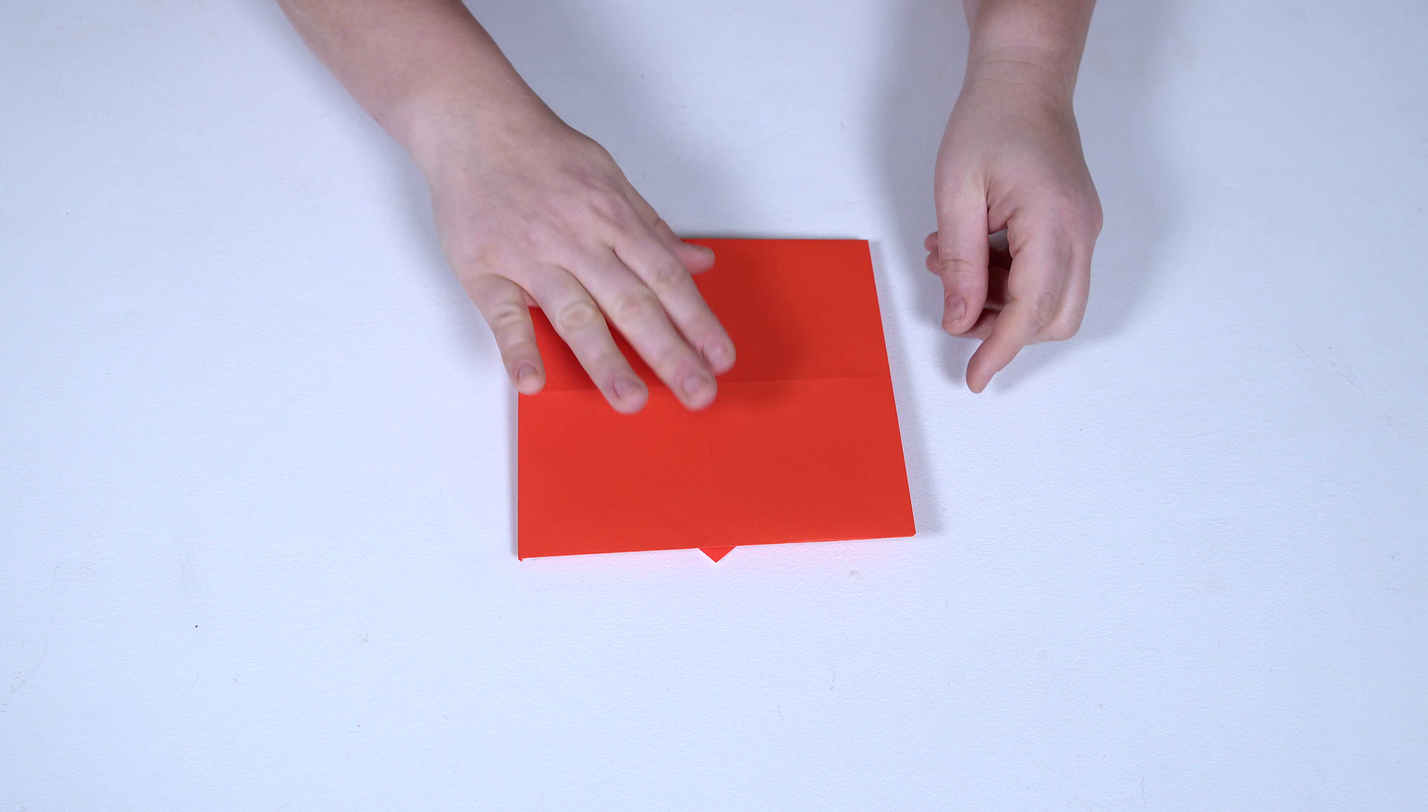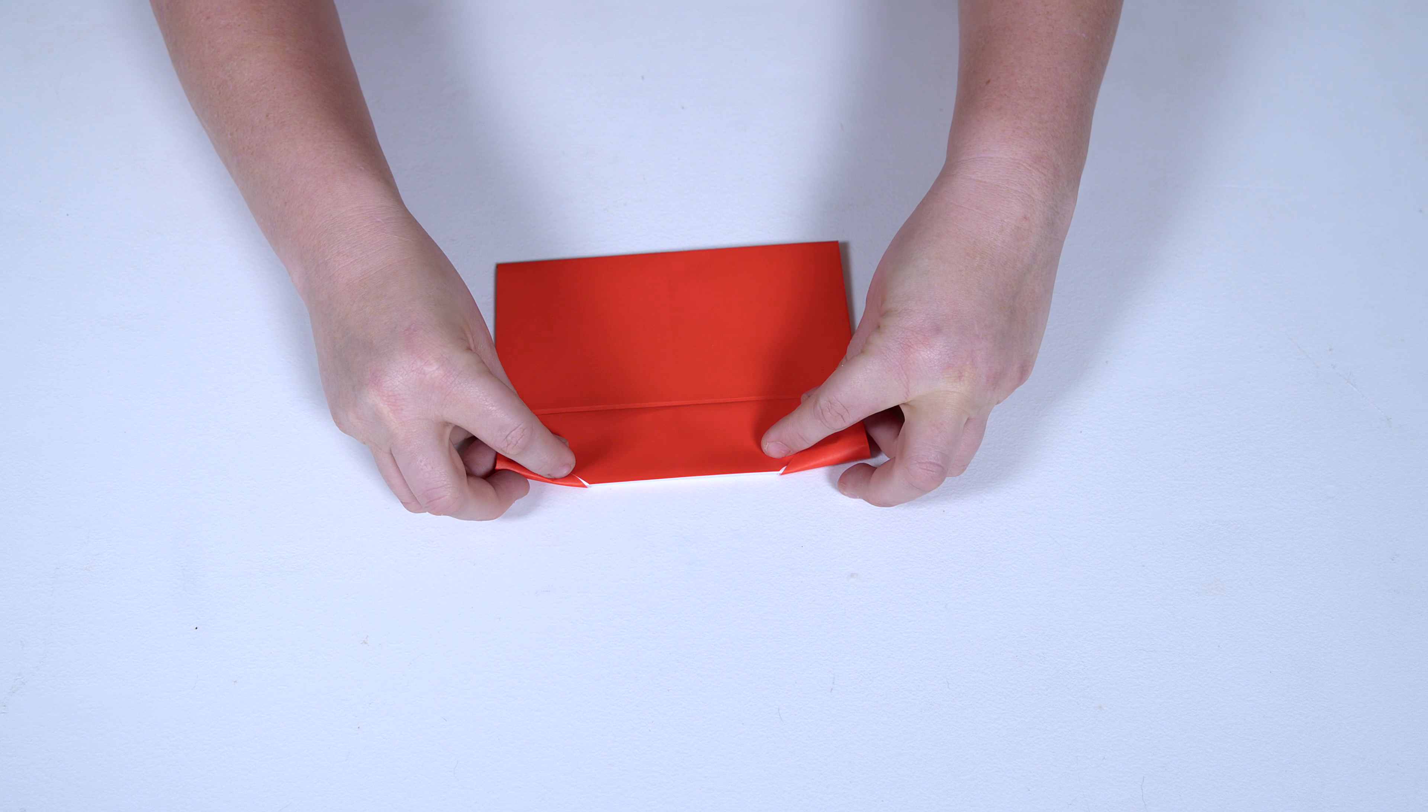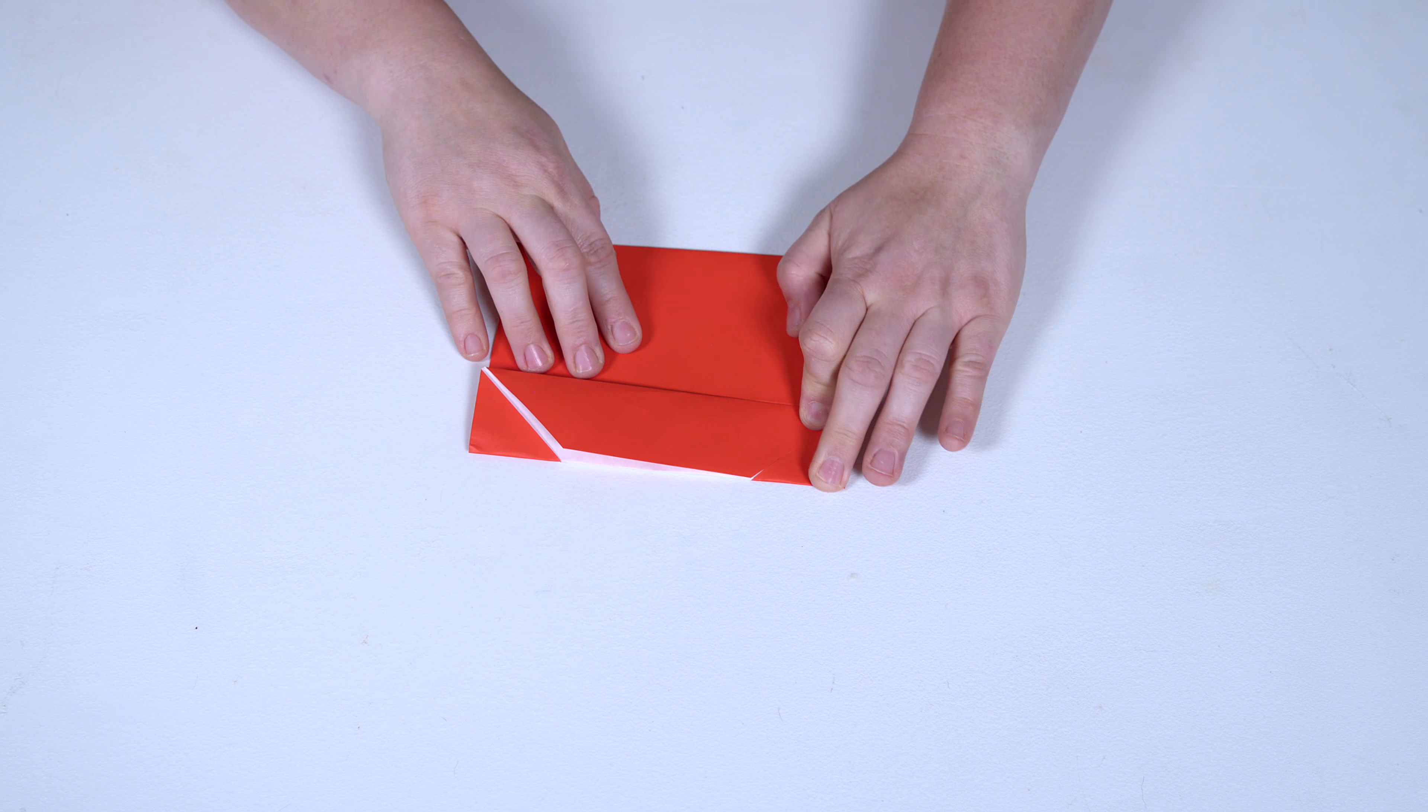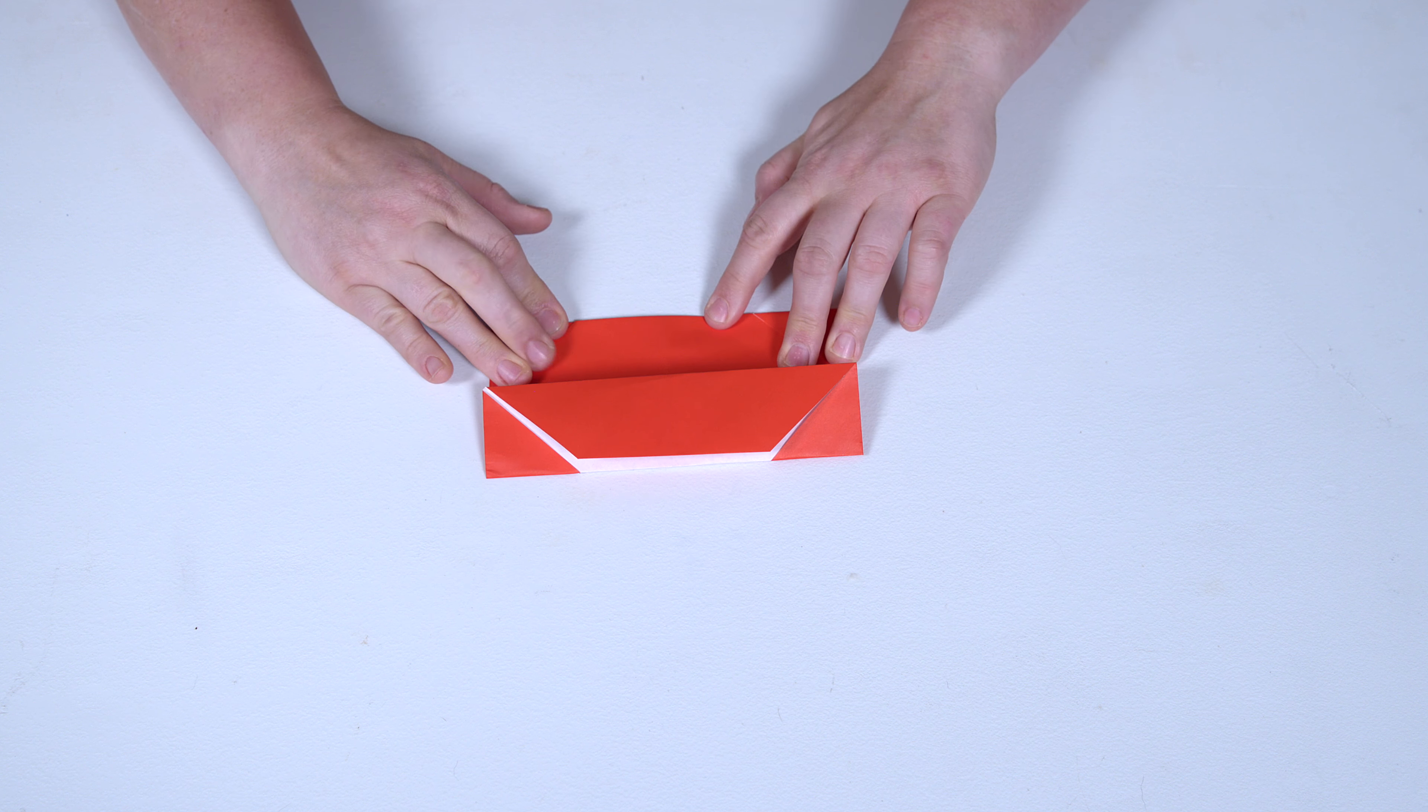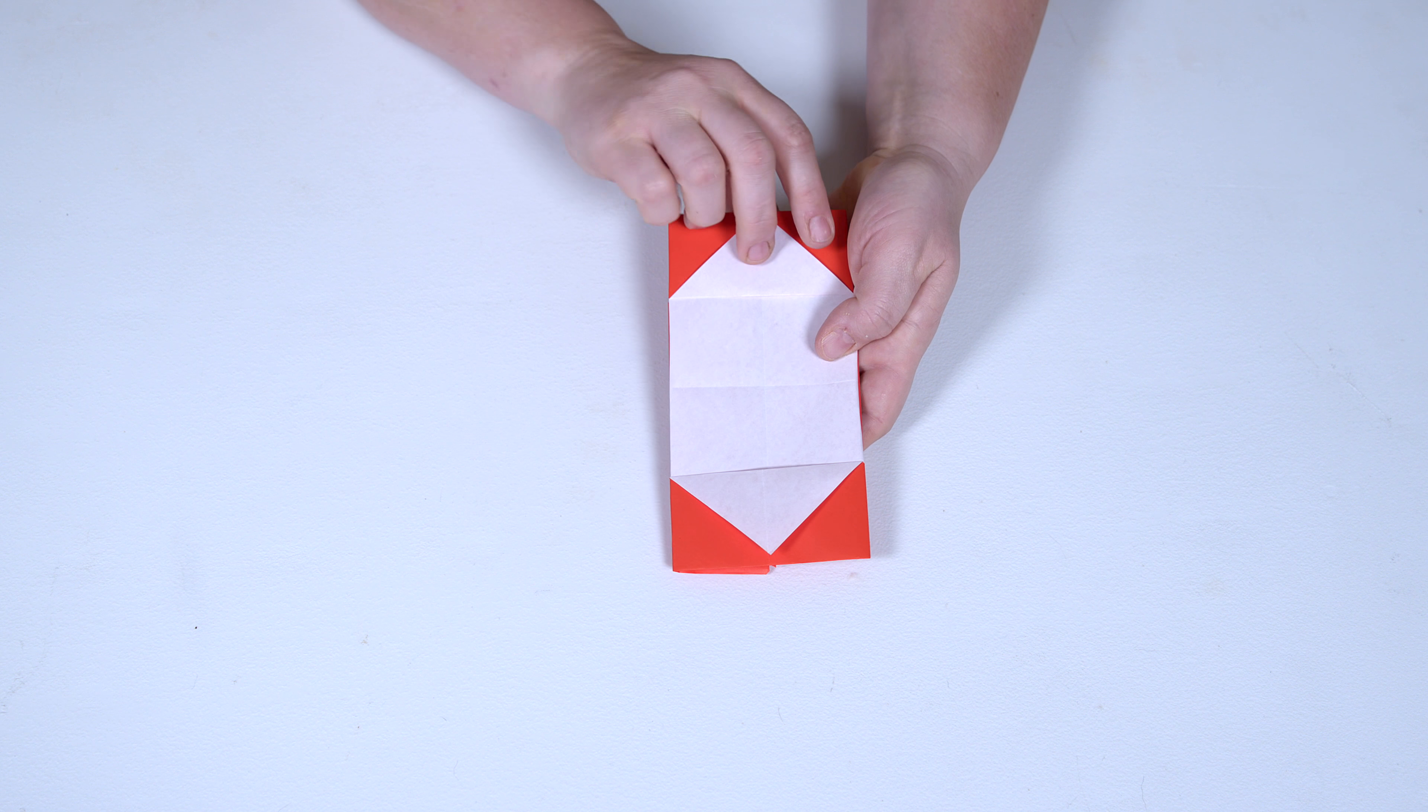So you're going to take the left side and fold it to the center just like this. Sorry about that, it's not very neat. Same exact move on the opposite side. And it should look like this, should see no white. Okay, on the back here's where all your white is, keep this on the bottom.